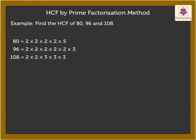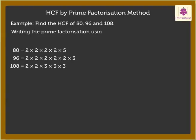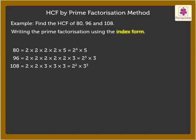Now, we can also write the Prime Factorization using the Index Form. We take the base with the minimum power as the H.C.F. Underline the common base in all the three numbers, which is 2. Finally, we take the base with the minimum power as H.C.F., which is 2 squared = 4.